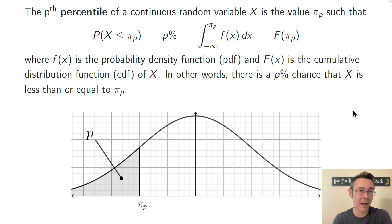I always keep this picture in mind here. I've drawn it for normal distribution, but this could be any continuous random variable that you have. If you have the pth percentile π_p, then p percent of the area is to the left of that value under that density curve. There's a p percent chance that X is less than or equal to π_p.